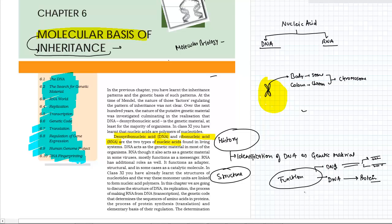After that, one domain is application—how and where you can apply this particular knowledge. In the historical background, we are going to do 6.2, search of the genetic material. In the structural portion, we are doing 6.1, DNA and RNA. In the functional portion, we are doing replication, transcription, genetic code, and translation. Regulation of gene expression will also be part of the function. After that, we will come to application: 6.9, human genome project and DNA fingerprinting. This was the basic introduction for this particular chapter.